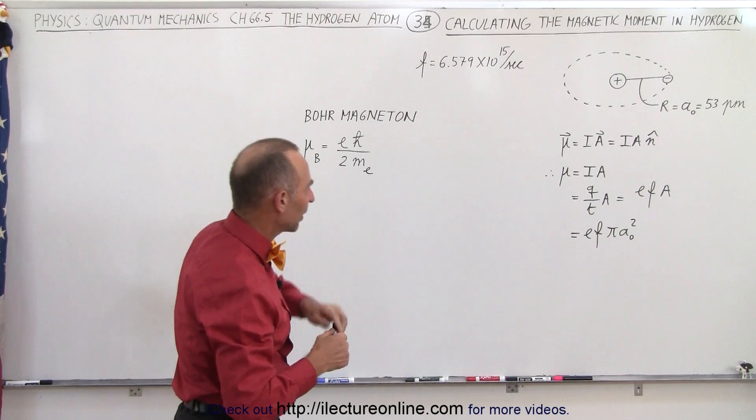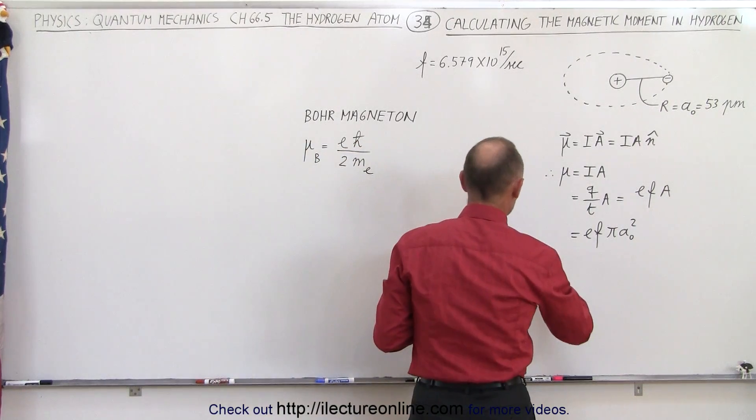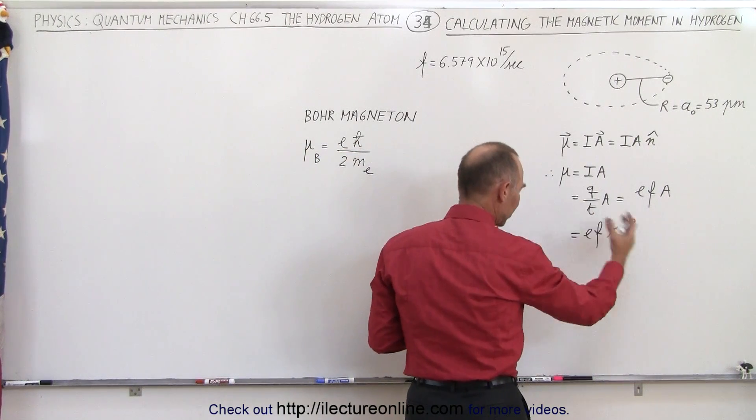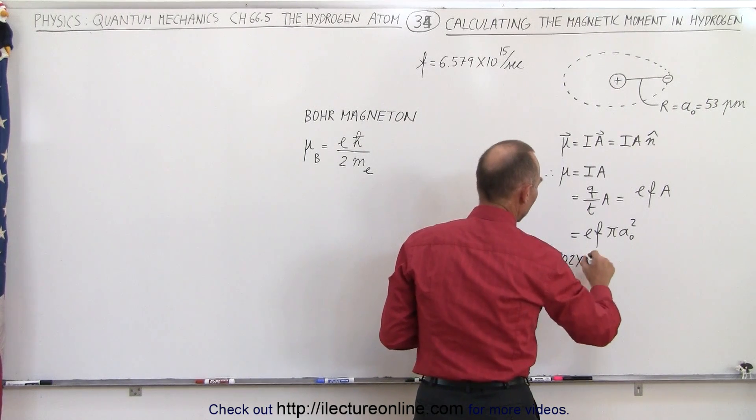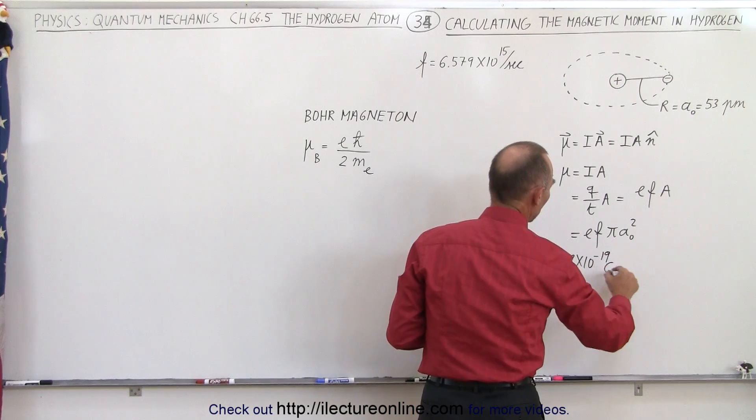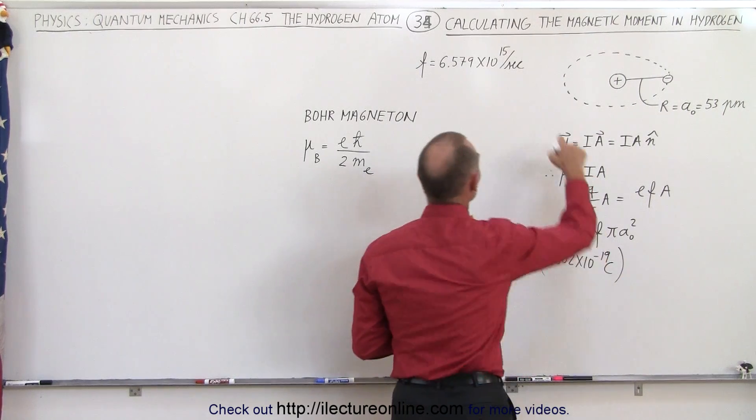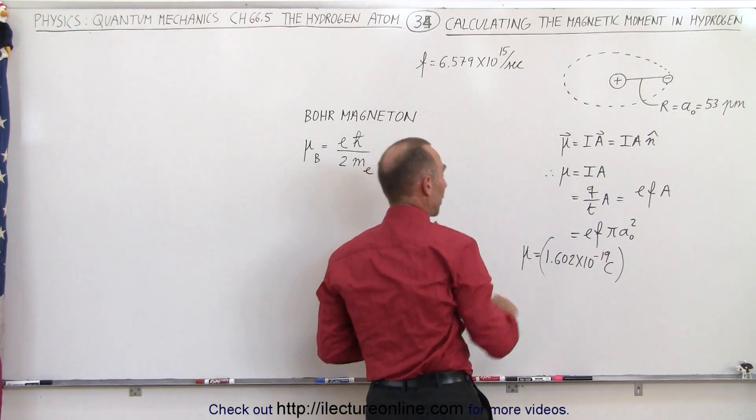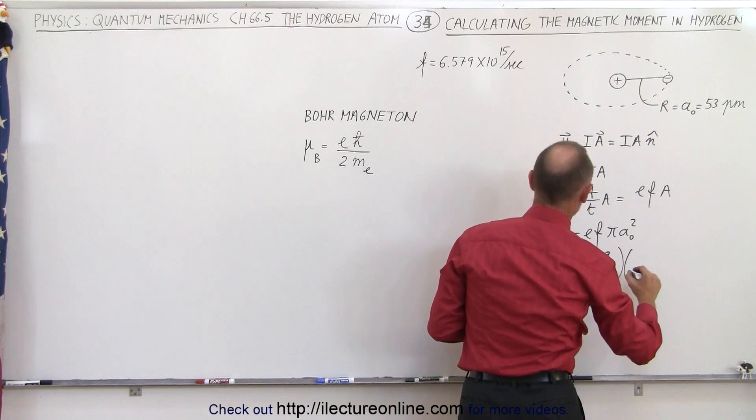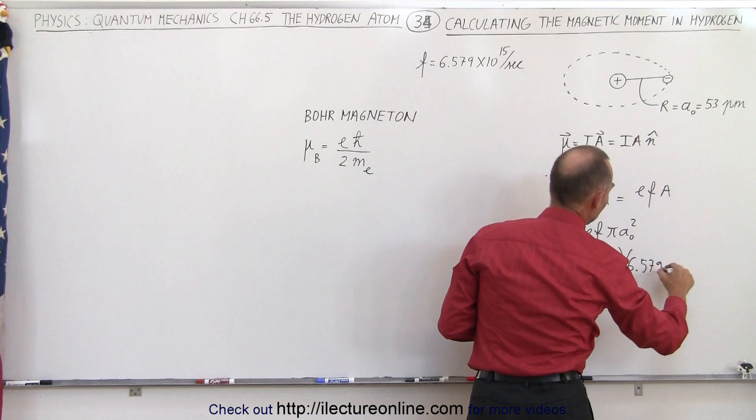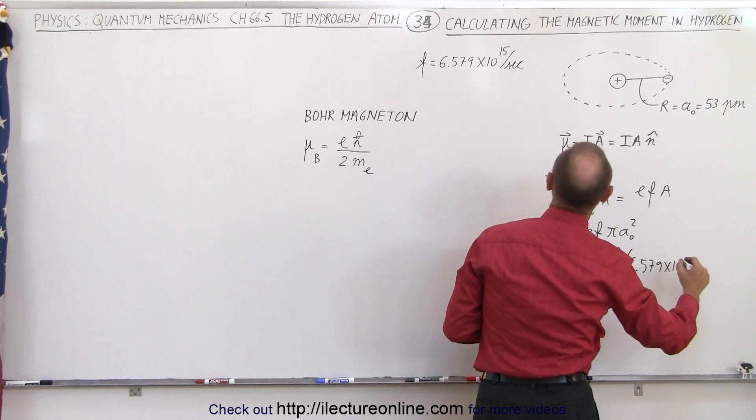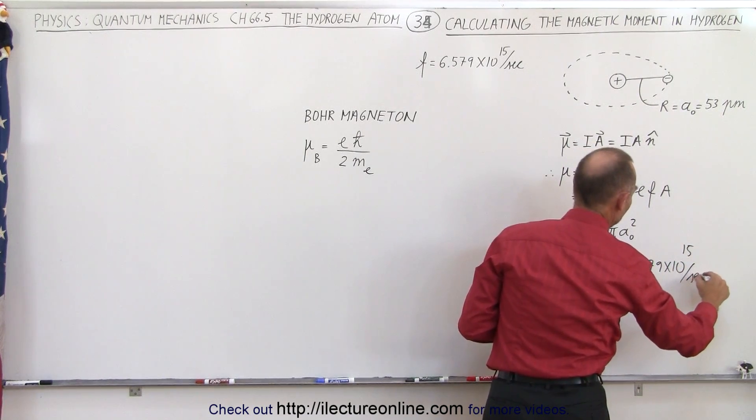So what we're going to do now is plug in everything that we know. That means that the magnetic moment, using the classical equation, is equal to the charge of a single electron, which is 1.602 times 10 to the minus 19 coulombs. We multiply that times the number of times that charge goes around. So that is equal to 6.579 times 10 to the 15th per second.